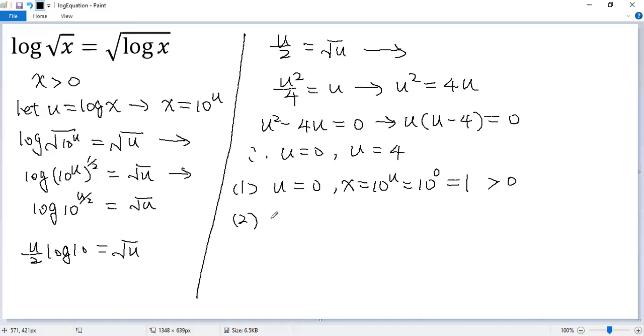Look at the second case. u equals 4, then x equals 10 to the power of u, which equals 10 to the power of 4, or you can write it as 10,000. Again, greater than 0.